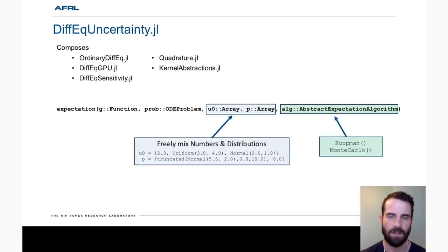Now these arrays can freely mix numerical types and distributions and the integrations will be taken on the lowest subspace possible. And then the algorithm, either Koopman pullback or Monte Carlo. So right now this API is a little bit in flux and we hope to stabilize it in the next couple months.